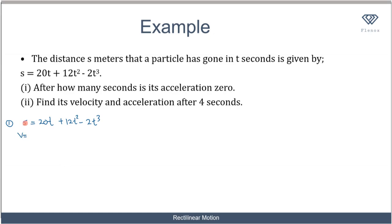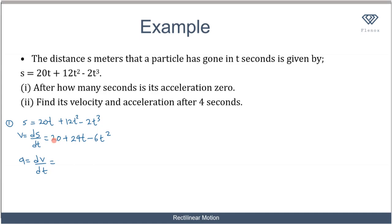To find the acceleration, we first differentiate the distance function to get velocity: ds/dt = 20 + 24t - 6t². Then we differentiate the velocity function to get acceleration: differentiating 20 gives 0, 24t gives 24, and -6t² gives -12t. So the acceleration function is a = 24 - 12t.